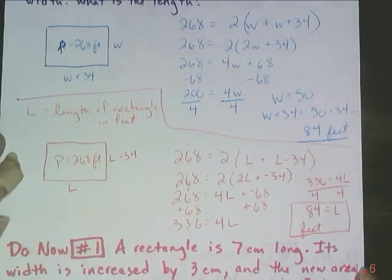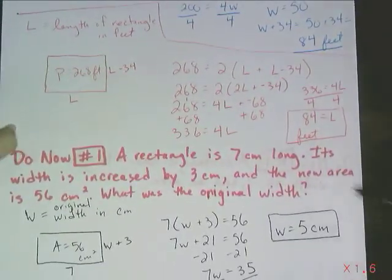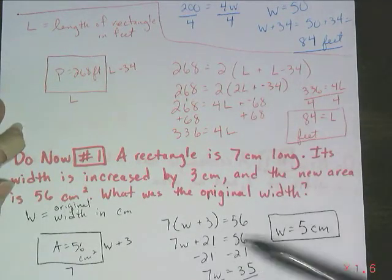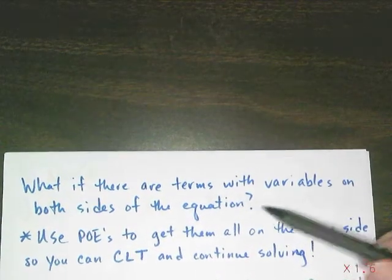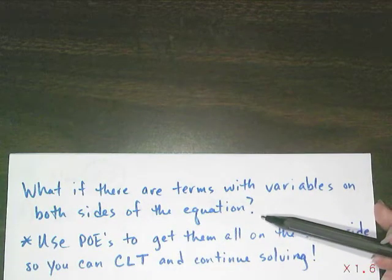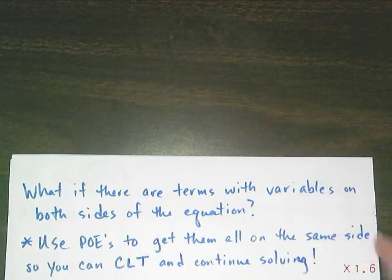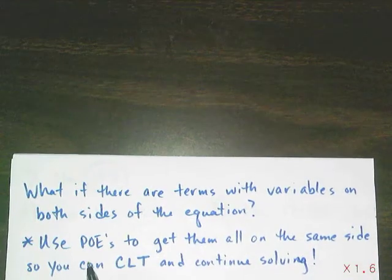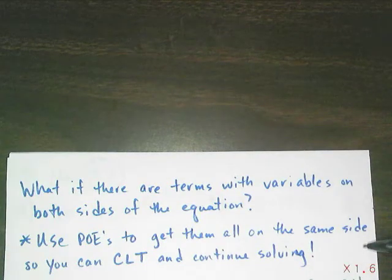Now, in these problems, we had to do some simplifying before we actually got to solving. And it wasn't that bad. We could use the skills we've learned before about how to combine like terms, about how to distribute. But, what if there are terms with variables on both sides of the equation? I can't combine terms together if they're on opposite sides of the equation. But I also can't isolate a variable if there are multiple variables floating around. I need to be able to combine those like terms together. And in order to do so, I need to use the pose in order to get all of those terms with variables on the same side of the equation. So, that way, you can combine those like terms and then continue solving.